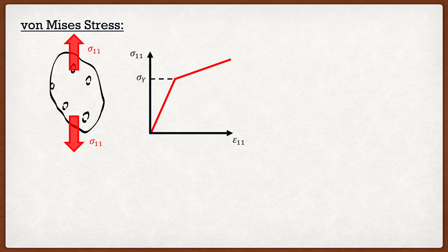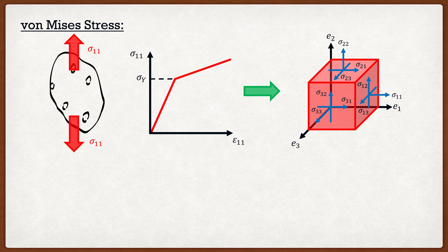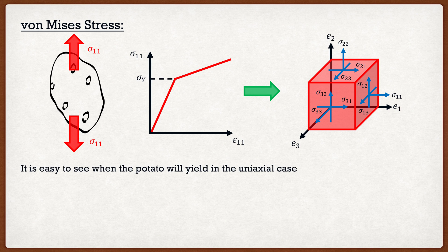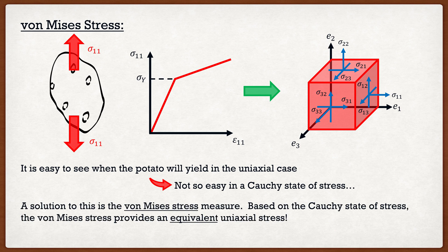If the yield stress is 400 MPa and the potato is subjected to 600 MPa, we know 600 is greater than 400, so yes, it yields. If we apply 300 MPa, that's below the yield limit, so it has not yielded. It's very easy to tell in a uniaxial case. However, if we have the potato in a triaxial state with six different stress components, it's very difficult to determine if the potato has indeed yielded. A solution to this problem in a 3D stress state is the von Mises stress measure, which is based upon the Cauchy stress and provides an equivalent uniaxial stress.